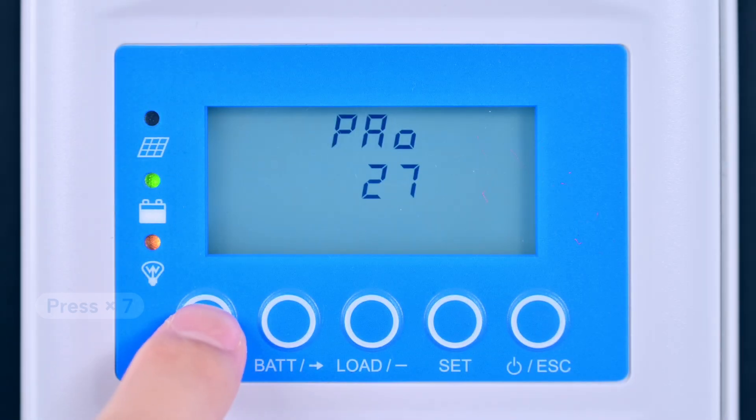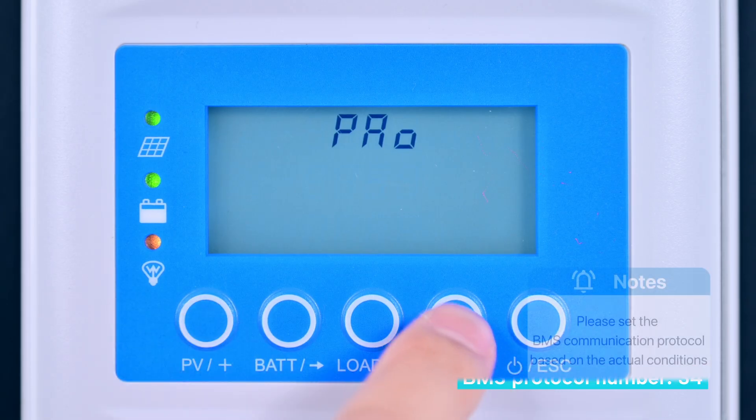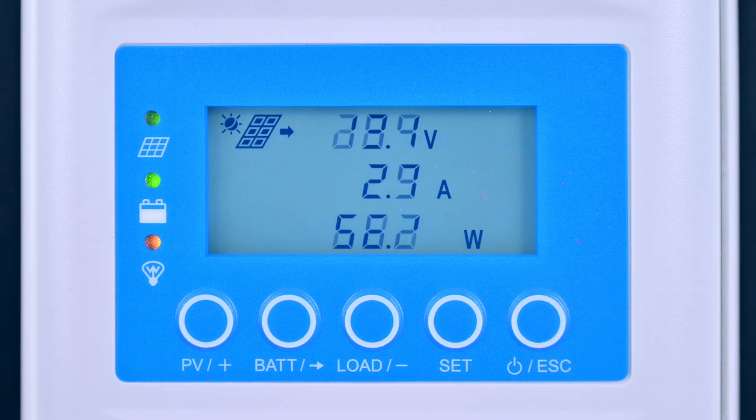Now, press PV plus to set the BMS communication protocol to the EP-EVER standard protocol number, 34. Note, please adjust the protocol number based on the battery you are using. Now, let's configure the battery type and capacity.